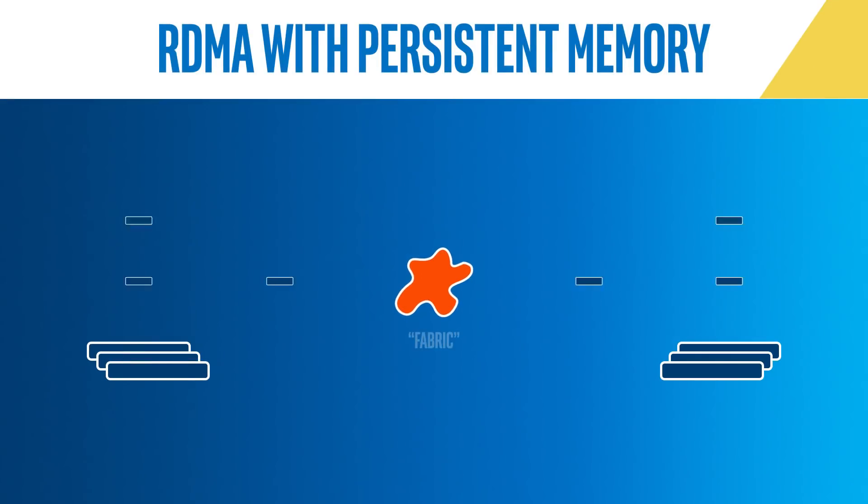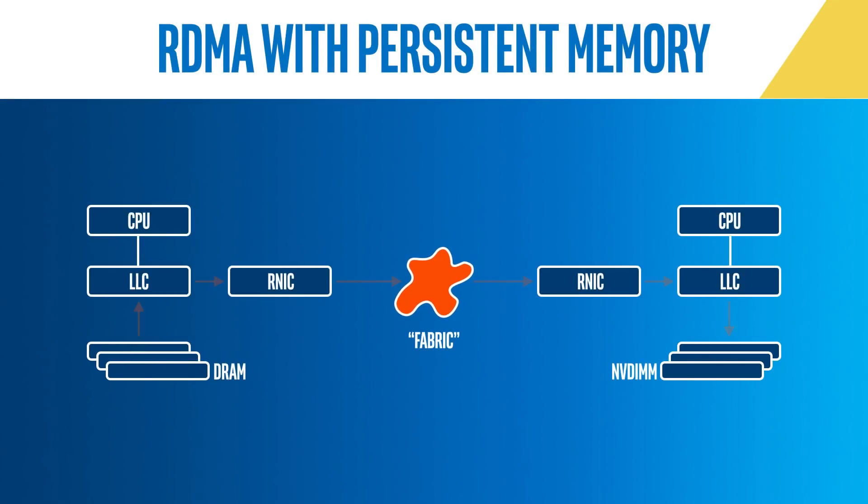Now, with persistent memory over fabric, it is possible to replace the volatile DRAM in the system with persistent memory. This allows us to utilize RDMA with persistent memory instead of DRAM.